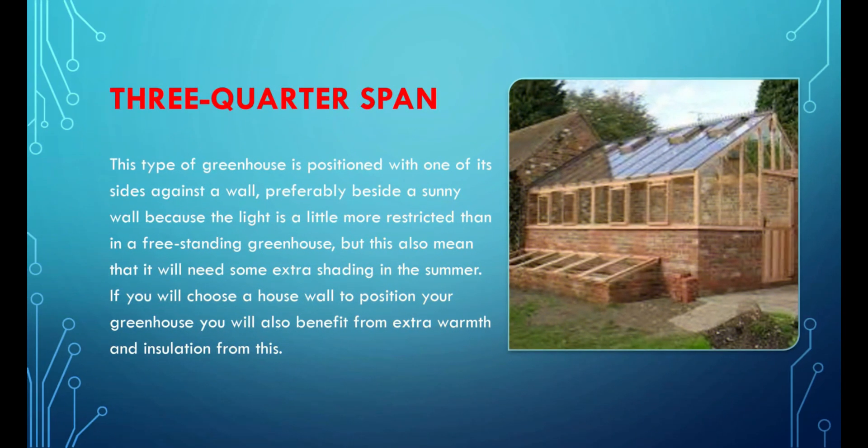The three-quarter span greenhouse is positioned with one of its sides against a wall, preferably a sunny wall, because the light is a little more restricted than in a freestanding greenhouse, which also means it will need some extra shading in the summer. If you position your greenhouse against a house wall, you will benefit from extra warmth and insulation.